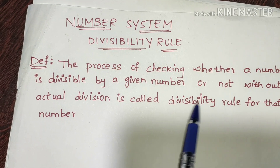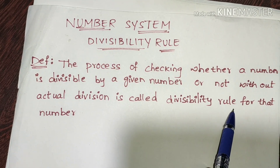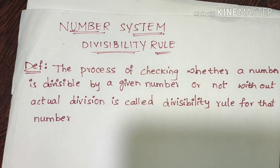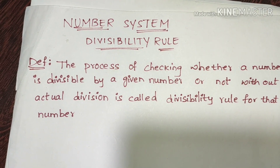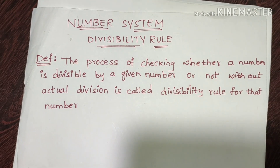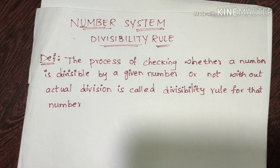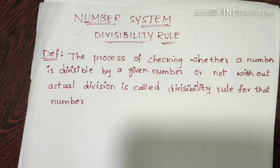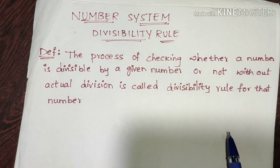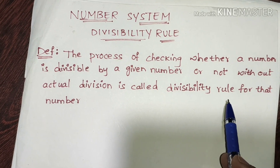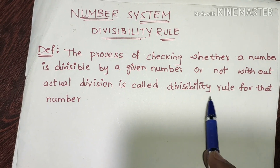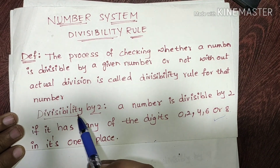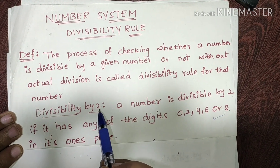The divisibility rule helps us avoid the time-consuming process of normal division. Instead of performing actual division, we use divisibility rules to quickly check divisibility. First, we have divisibility by 2.